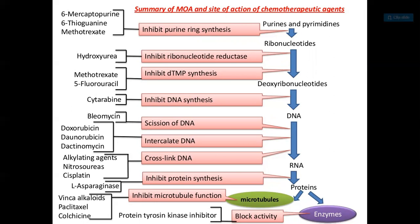Purine and pyrimidine biosynthesis is necessary for ribonucleotides, which are important for DNA synthesis. DNA is essential for RNA, which produces proteins and drives the cell cycle. There are drugs that exert their action on different parts of this cycle. For example, 6-mercaptopurine, 6-thioguanine, and methotrexate inhibit purine ring synthesis. Methotrexate and 5-fluorouracil inhibit thymidylate synthase (DTMP synthase), which is important in the formation of ribonucleic acid.